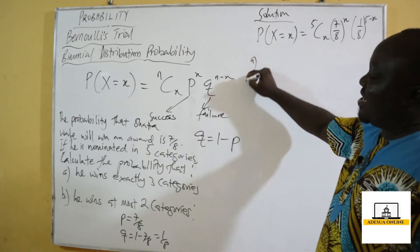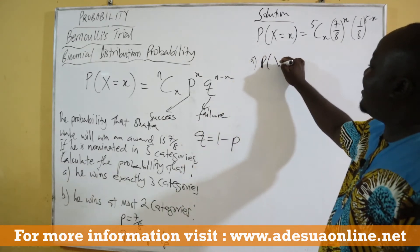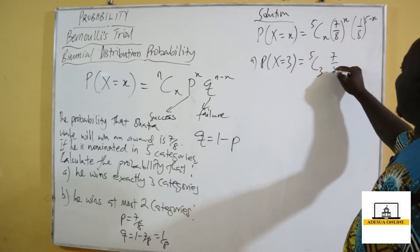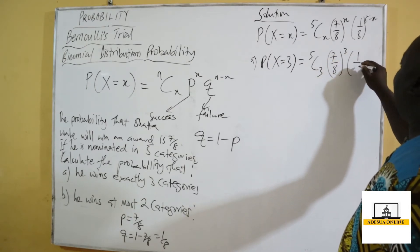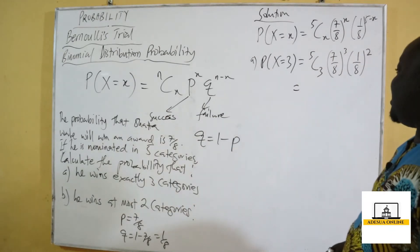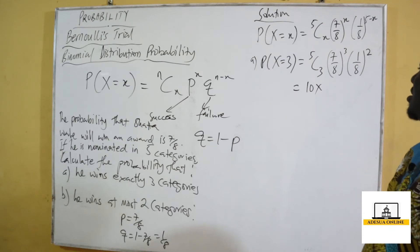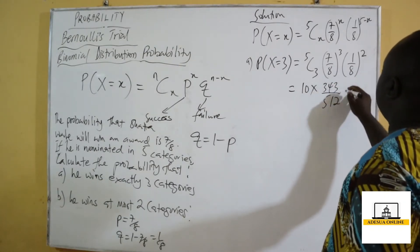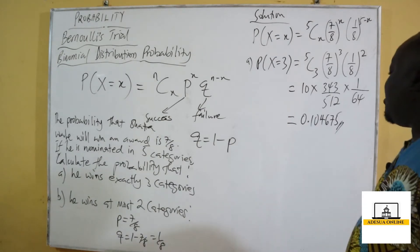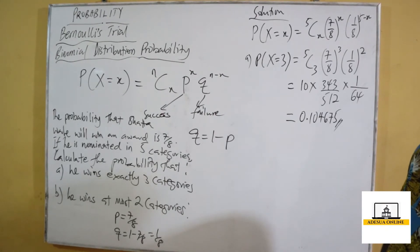Part A says we should find the probability that he wins exactly three of the categories. So P(X = 3) equals 5C3 times (7/8)^3 times (1/8)^(5−3), which is (1/8)^2. Our 5C3 gives us 10, times (7/8)^3 times (1/64). When we calculate all this, our final answer becomes 0.104675. So this is Shata Wale winning exactly three categories.